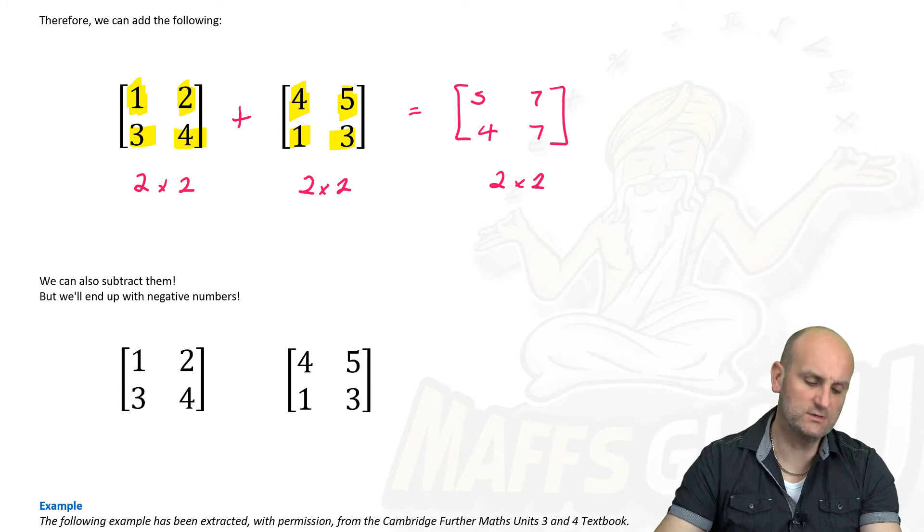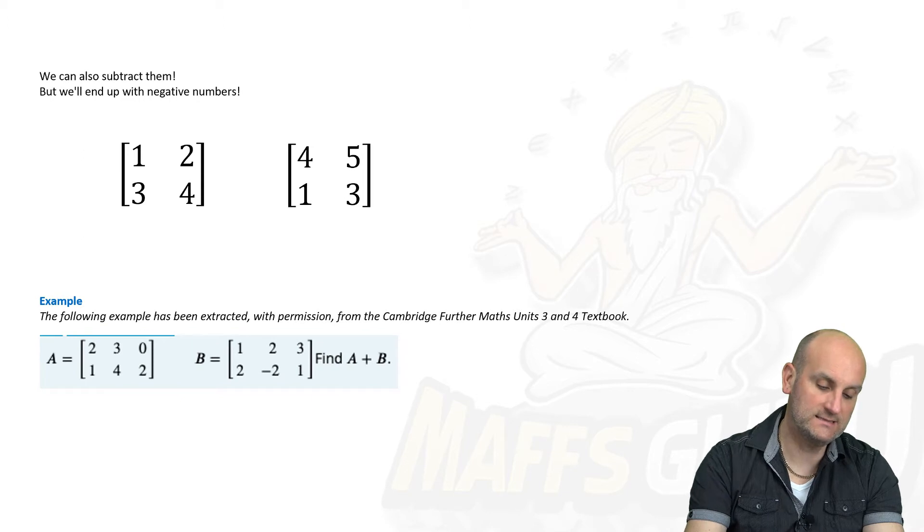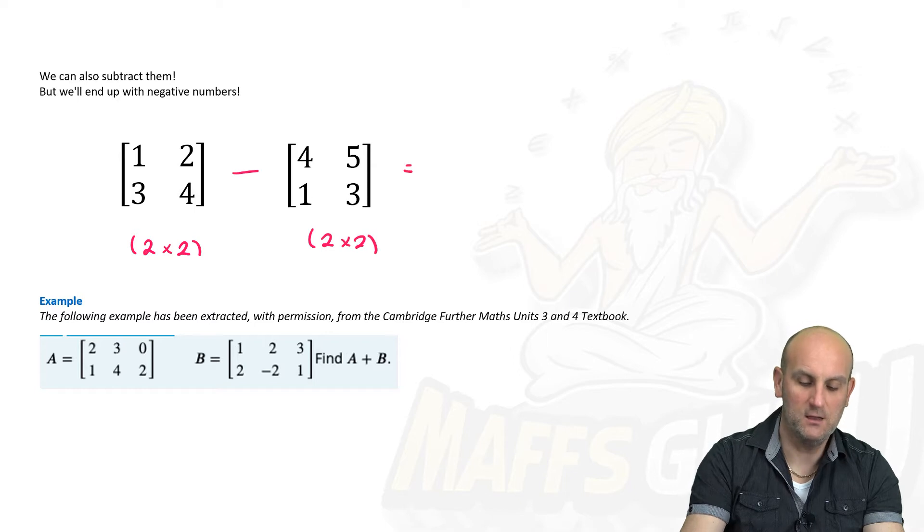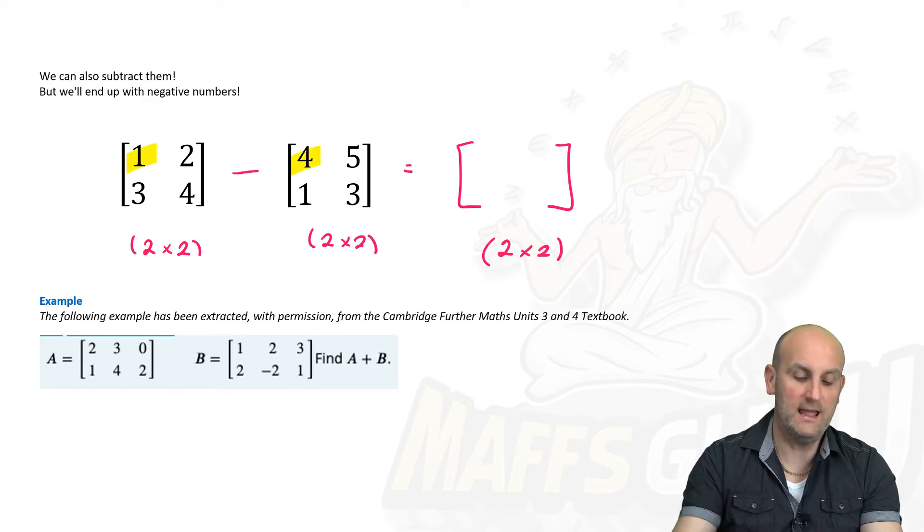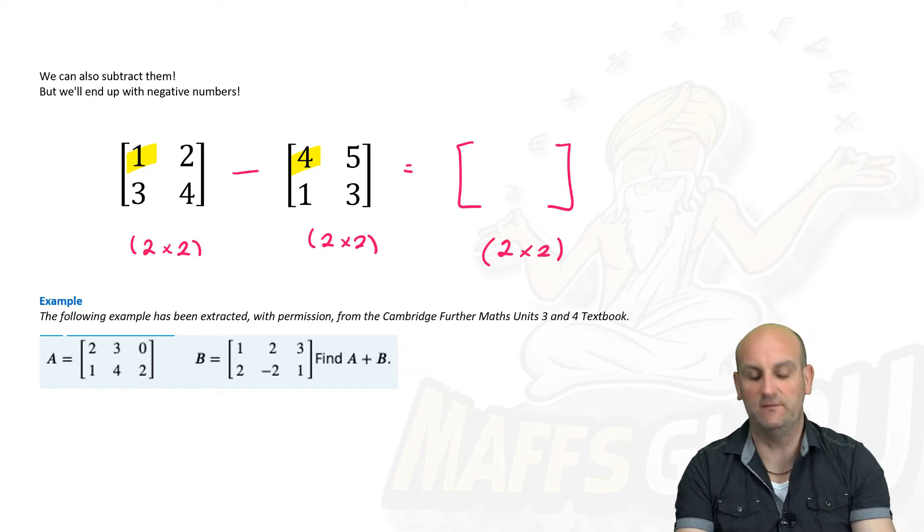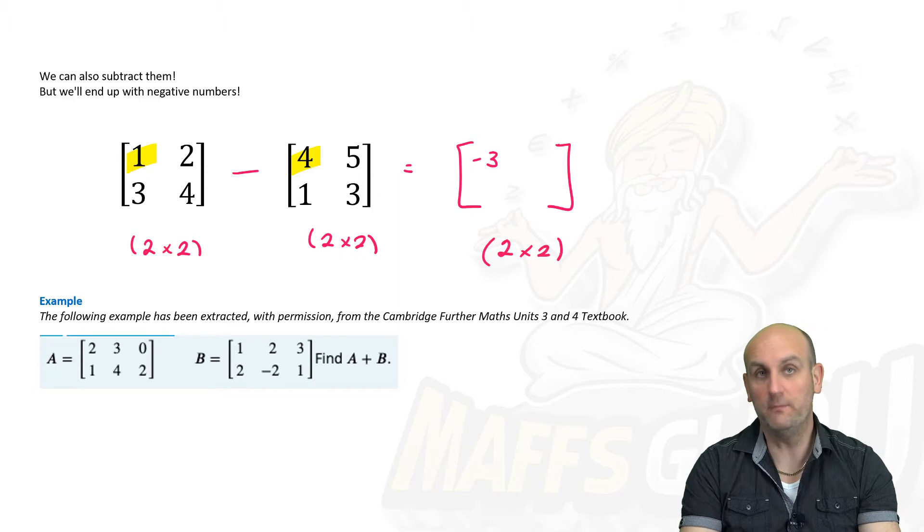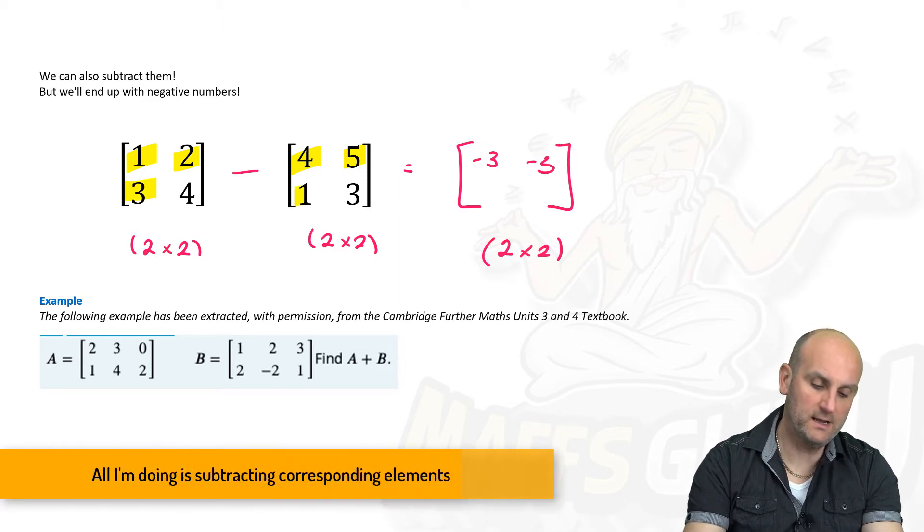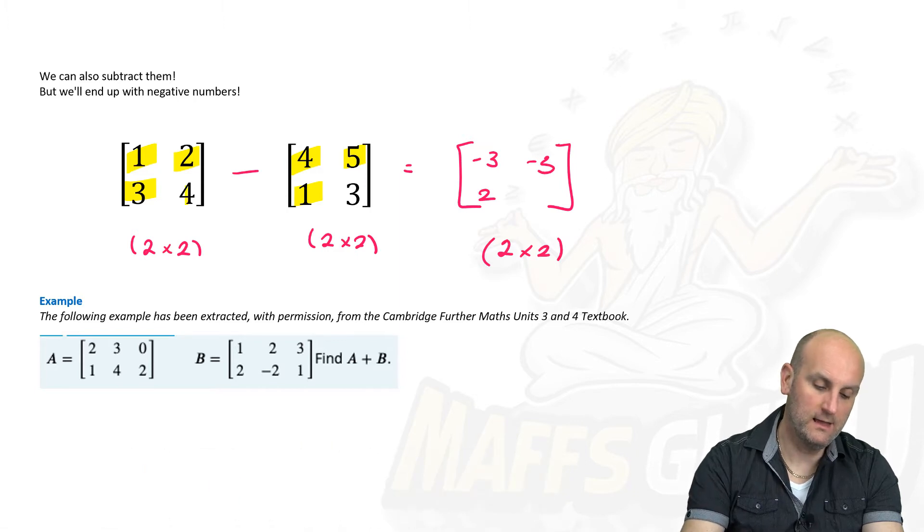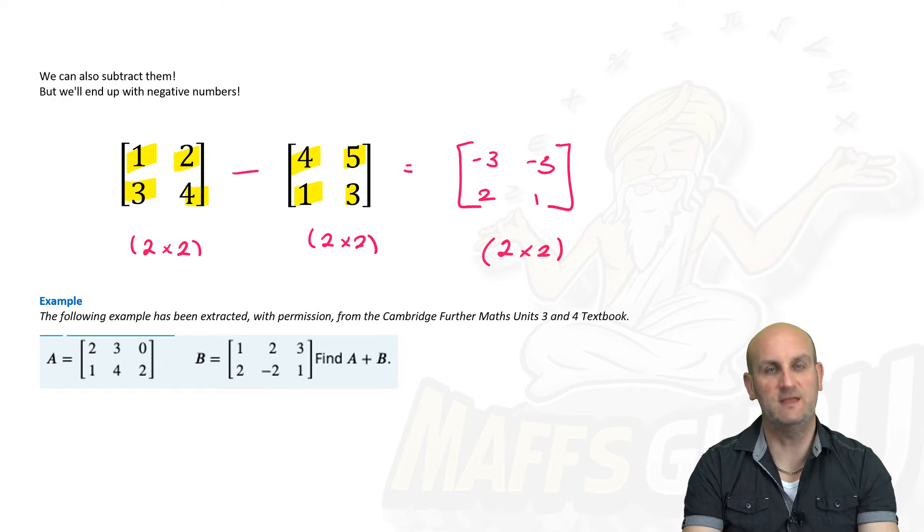And lo and behold, that's adding these things together. We can also subtract them by doing exactly the same thing. The first thing you need to check is, are the orders the same? 2x2, 2x2 they are. So that tells me that my answer is also going to come out as a 2x2. Now, subtracting, same as adding, but subtracting.